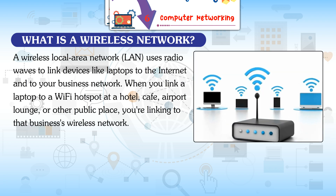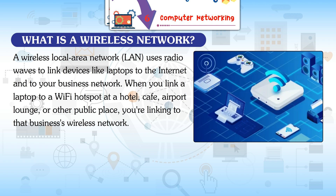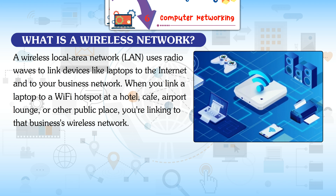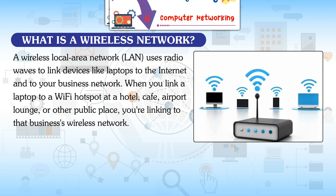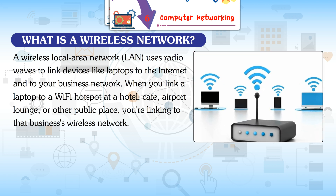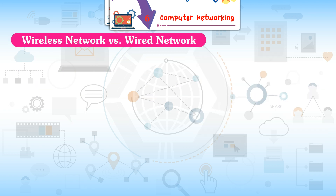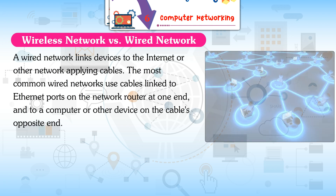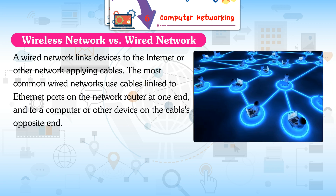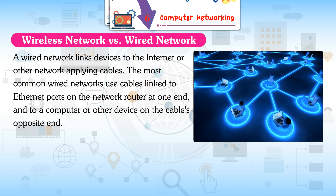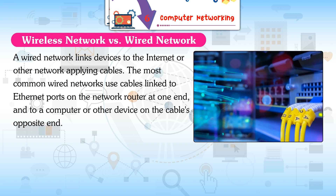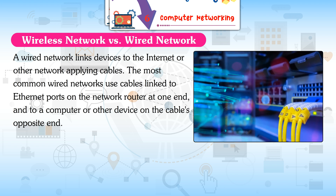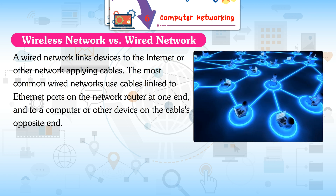A wireless local area network (LAN) uses radio waves to link devices like laptops to the internet and to a business network. When you connect a laptop to a Wi-Fi hotspot at a hotel, cafe, airport lounge, or other public place, you are linking to that business's wireless network. A wired network, by contrast, links devices to the internet using cables, most commonly Ethernet cables connected to a network router at one end and a computer or other device at the other.